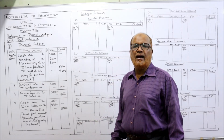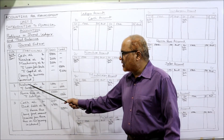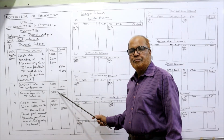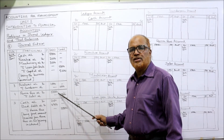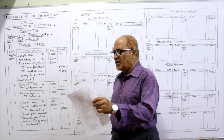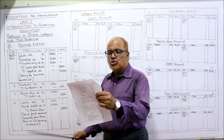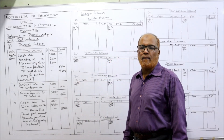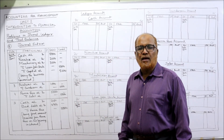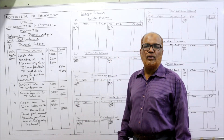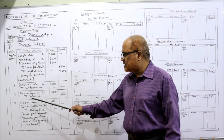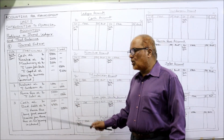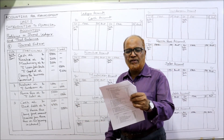The entry for the purchase: purchases account debit to Sundaram 1000, being goods purchased on credit. For the third transaction, goods were sold to Rama Rao on credit: Rama Rao account debit to sales — being goods sold on credit.